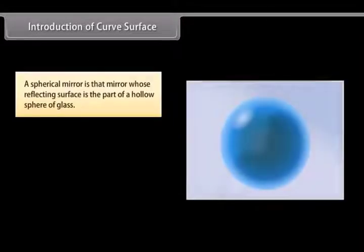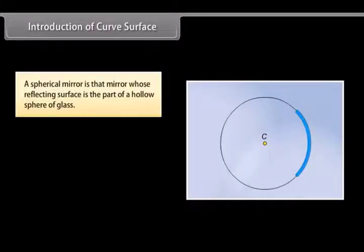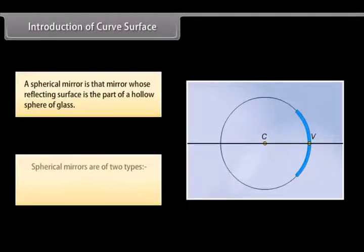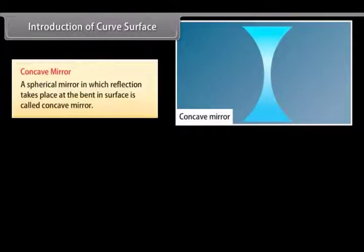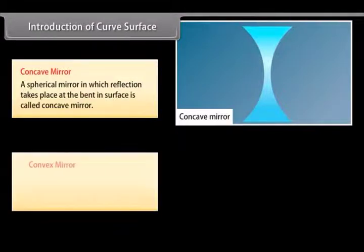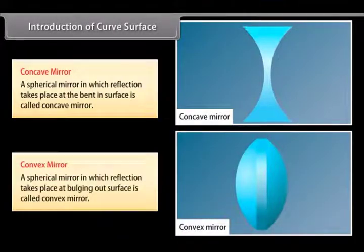A spherical mirror is a mirror whose reflecting surface is part of a hollow sphere of glass. Spherical mirrors are of two types: concave mirror and convex mirror. A concave mirror is a spherical mirror in which reflection takes place at the bent-in surface. A convex mirror is a spherical mirror in which reflection takes place at the bulging-out surface.